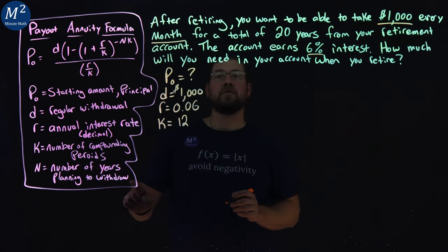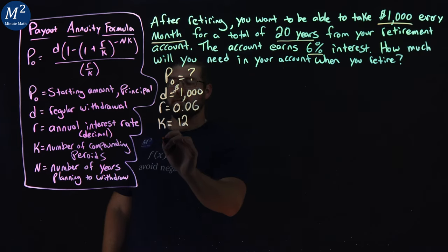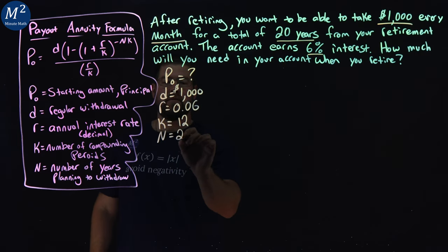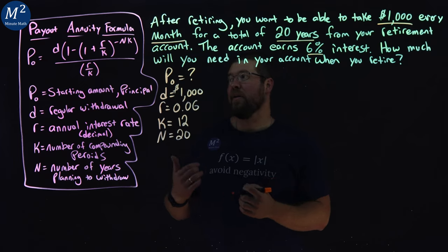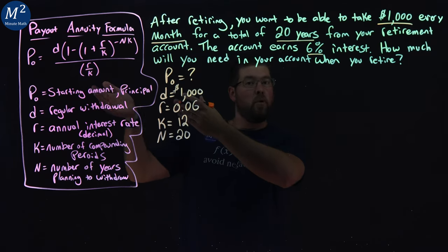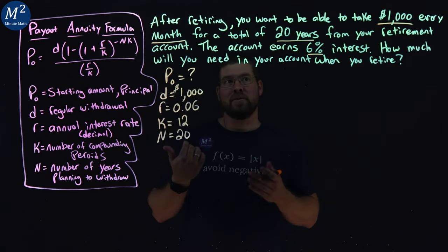And the number of years we're going to be withdrawing, they tell us it's 20 years. So that's our N value, that's 20. And so now at this point, we're going to take our formula and plug in what we know to find what we don't know.